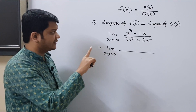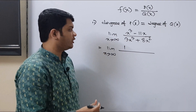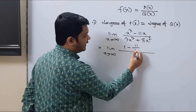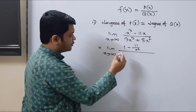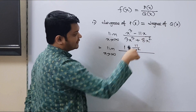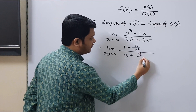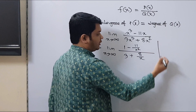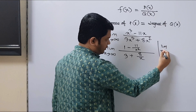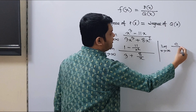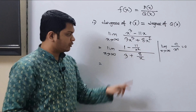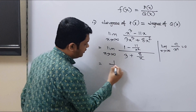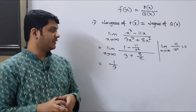For limit X tends to infinity, we apply the same concept as before: we divide all the terms by the maximum power, which is x³. Dividing x³ by x³ gives 1, minus 11x divided by x³ gives 11/x²; and 3x³ divided by x³ gives 3, plus 8x² divided by x³ gives 8/x. The 11/x² and 8/x parts both equal 0, so we end up with 1 divided by 3.